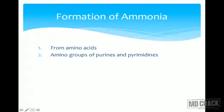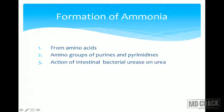Another important source is the action of intestinal bacterial urease on urea. This becomes especially important when there is liver damage. Bacteria in the intestine contain urease — if urea reaches the intestine, urease acts on it and releases ammonia. This ammonia is absorbed back into the blood, so blood also contains some ammonia coming from the intestine via intestinal bacterial urease.